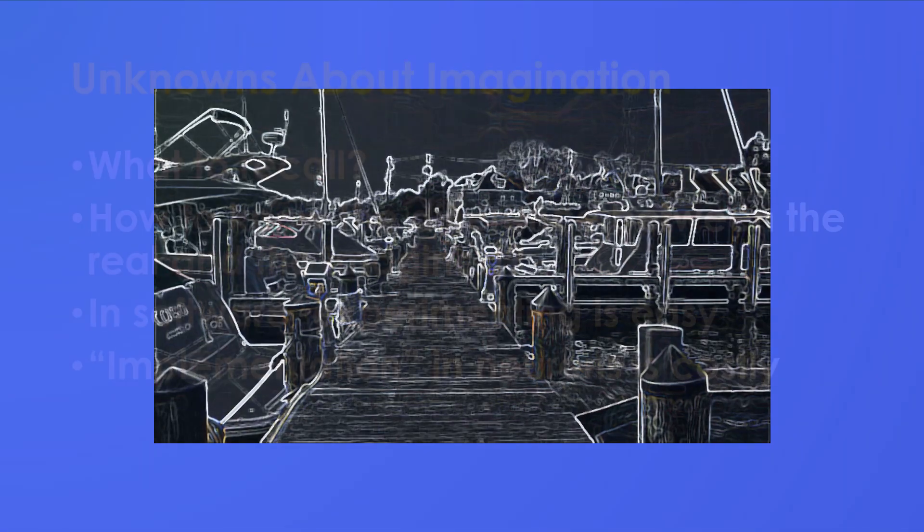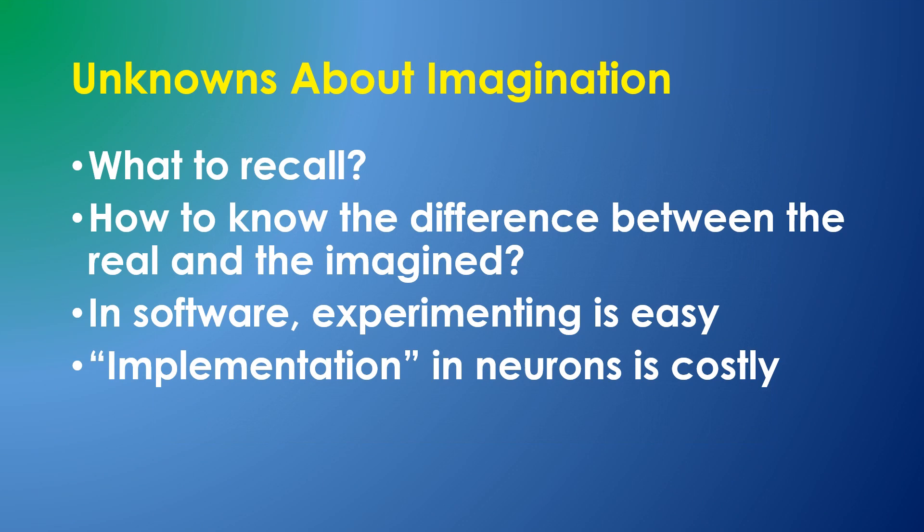We know that the human brain is capable of imagination, and this video has presented a possible mechanism which could implement an imagination in an AGI system. We may eventually learn the biological mechanisms of imagination, and they may or may not parallel this explanation. The mechanisms of imagination presented here would be straightforward to implement in software, but implementing them with neurons is more difficult.